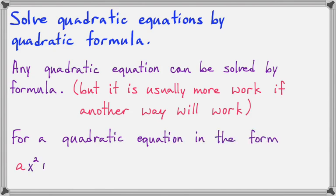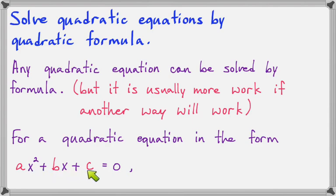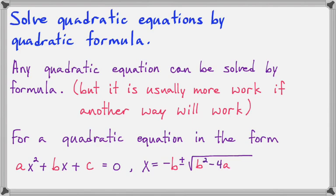So here it is. For a quadratic equation in the form ax squared plus bx plus c equals 0, we can pick out the a, b, and c, and then they make this formula: x equals negative b plus or minus the square root of b squared minus 4ac all over 2a. It's really important that you understand that it's all over 2a and not just the radical part.